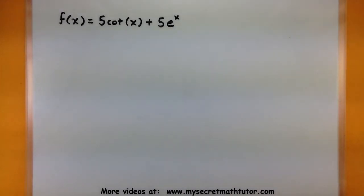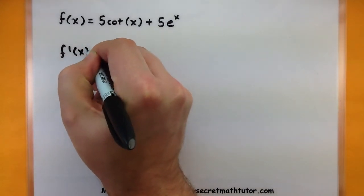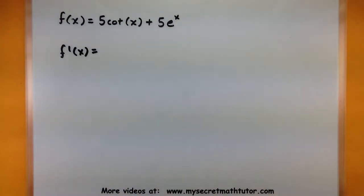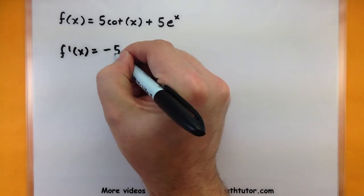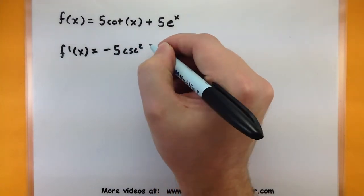This one is f of x equals five cotangent of x plus five e to the x. And again, we want to know what is its derivative. So the derivative of cotangent is negative cosecant squared. And let's go ahead and write that negative sign all the way out front. So negative five cosecant squared of x.